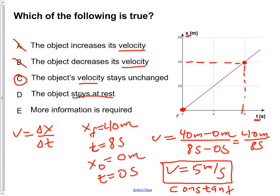Now, choice D states that the object is at rest. But we have a non-zero velocity. So it's moving. It's not at rest.